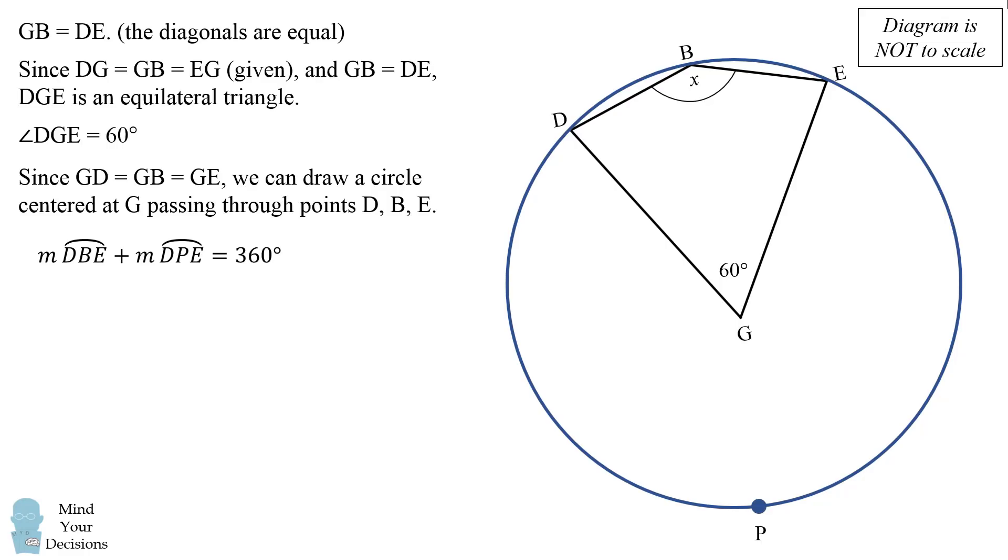The entire measure of a circle is equal to 360 degrees. So the measure of arc DBE plus the measure of arc DPE is equal to 360 degrees. I've written m to mean the measure of the arc. Now the measure of arc DBE is equal to 60 degrees because the central angle is 60 degrees. So we substitute in that value and that means the remaining arc, the measure of DPE is equal to 300 degrees.